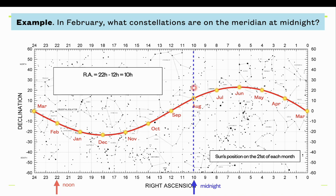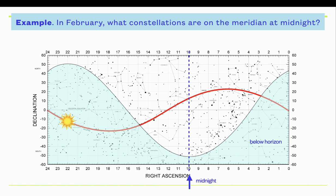So what constellations? You can see that this constellation right here is Leo the Lion, and Hydra the Sea Serpent goes along through here. So Leo and Hydra would be high in the sky at midnight in February — that's easy to figure out if you know the right ascension of the Sun at that time of year.